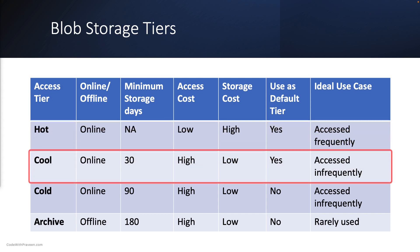The second tier is the cool access tier, which is most suitable for storing infrequently accessed or modified data that must be kept for at least 30 days. Compared to the hot tier, it has lower storage cost but higher access cost, making it an excellent choice for those looking to optimize storage cost. It is an online tier that can be used as a default tier.